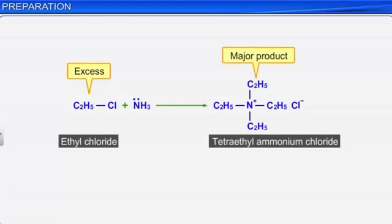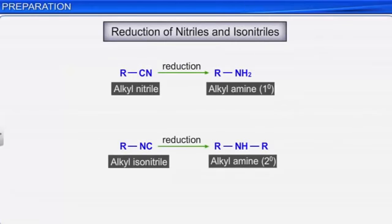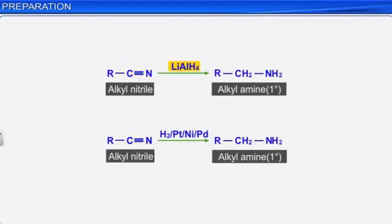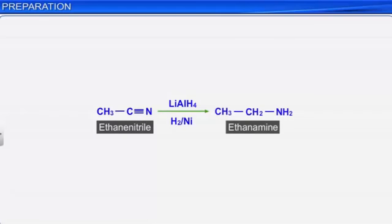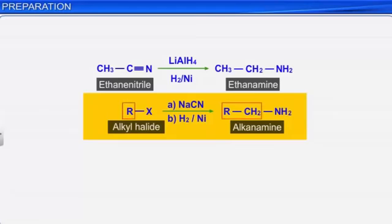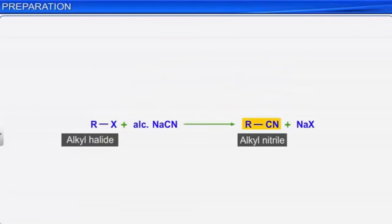Amines can also be prepared by the reduction of nitriles and isonitriles. The reduction of nitriles with lithium aluminium hydride or with hydrogen in the presence of catalysts such as platinum, nickel, or palladium yields primary amines. For example, ethanenitrile on reduction with lithium aluminium hydride or catalytic reduction gives ethanamine. This reaction has synthetic importance as it is used to step up the carbon chain. Alkyl nitriles can be easily prepared by the action of alcoholic sodium or potassium cyanide on alkyl halide, and the nitriles thus formed are reduced to get primary amines.